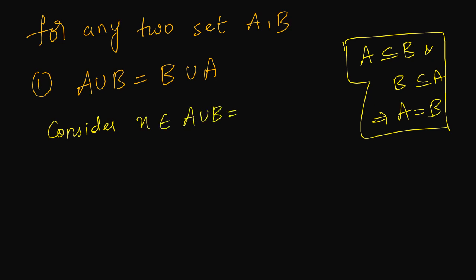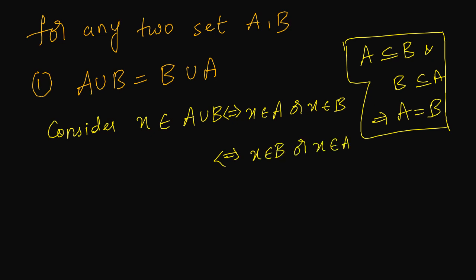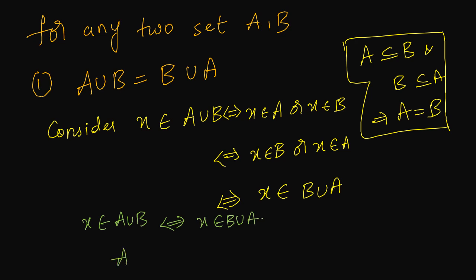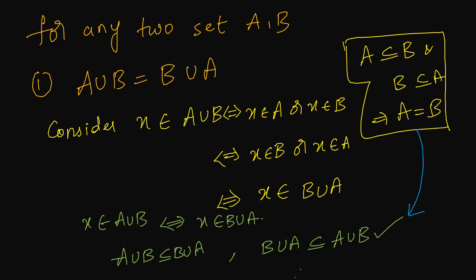Let us consider one element x from the left-hand side, which is A union B. The meaning of A union B is that x can be in set A or x can be in set B. I can rewrite this as x is in set B or x is in set A, which means x belongs to B union A. Using the if and only if condition, I can say A union B is a subset of B union A, and B union A is also a subset of A union B. By the equality of sets property, A union B equals B union A.